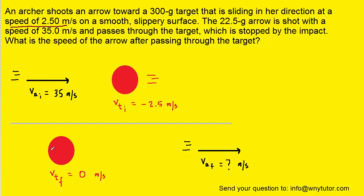After the collision, the target is brought to rest, so its final velocity is zero, and the arrow continues its rightward journey at some unknown velocity that we're trying to find.